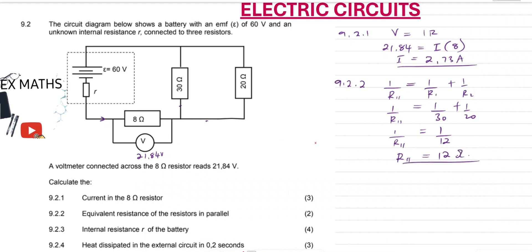An alternative method is product over sum, since we have two resistors in parallel. So R parallel equals 30 times 20 over 30 plus 20, which also gives us 12 ohms.